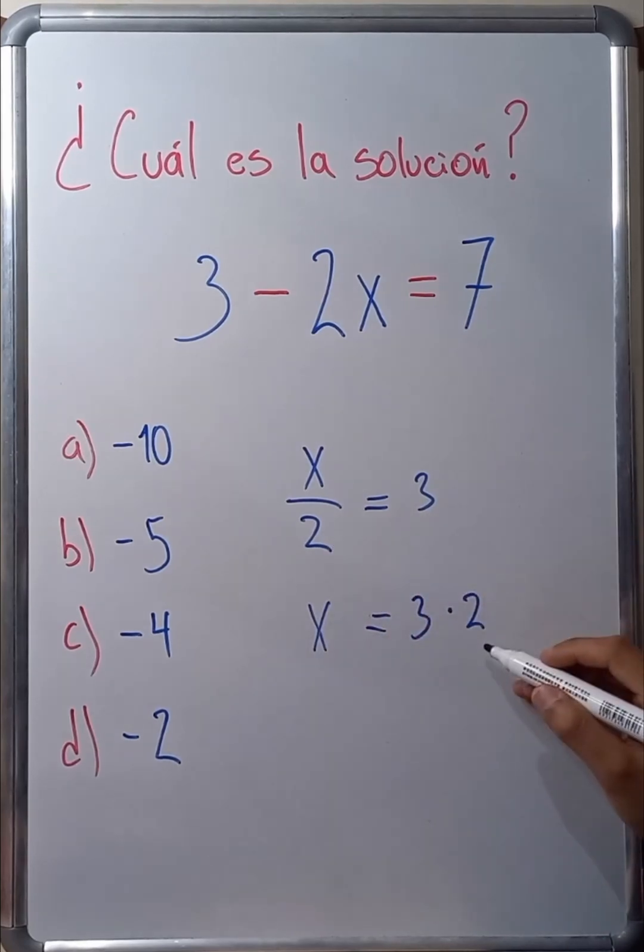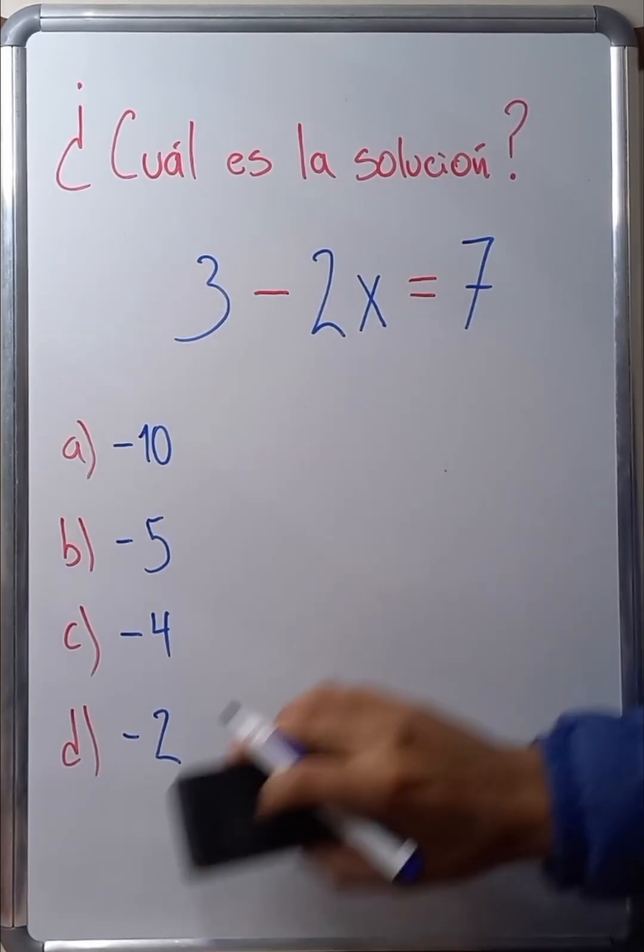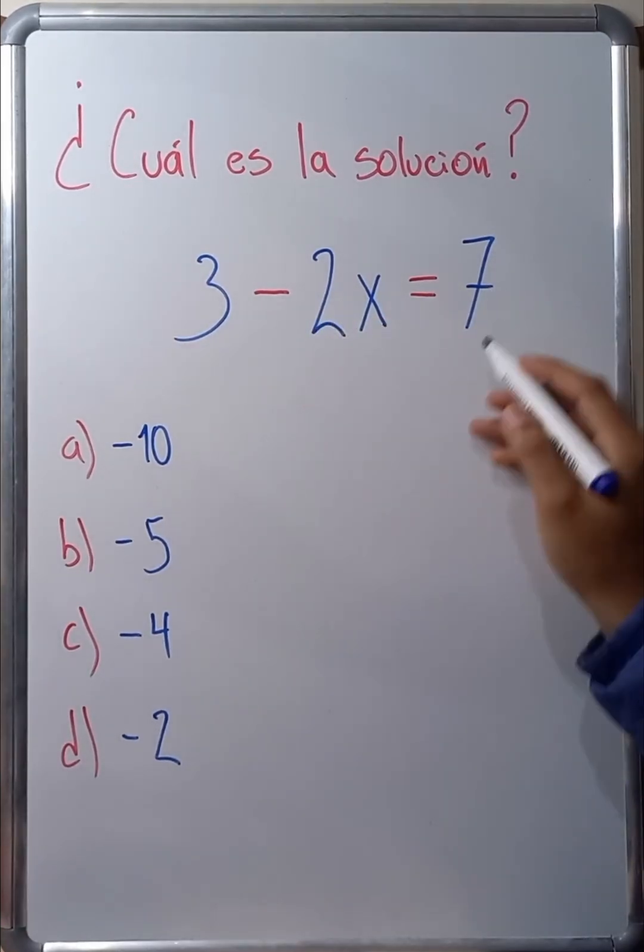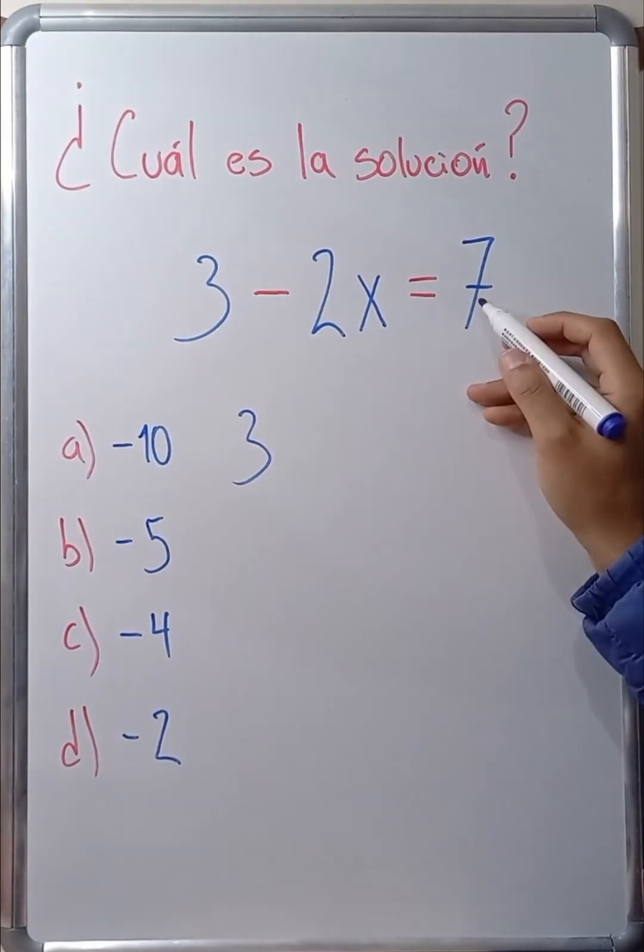Knowing this, we can now solve this exercise. Let's move the negative 2x to the other side of the equation. Here, I'll have 3. We can also move the 7 to the left side.